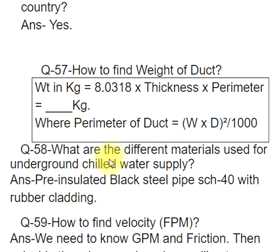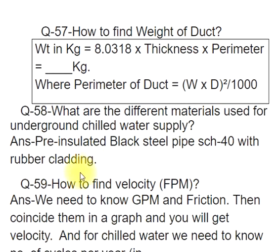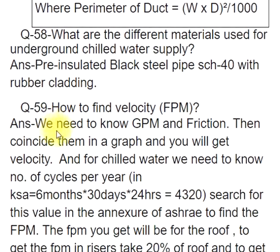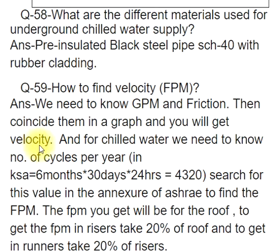Q58: What are the different materials used for underground chilled water supply? ANS: Pre-insulated black steel pipe SCH-40 with rubber cladding. Q59: How to find velocity in FPM? ANS: We need to know GPM and friction, then coincide them on a graph to get velocity.